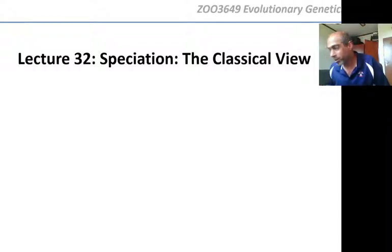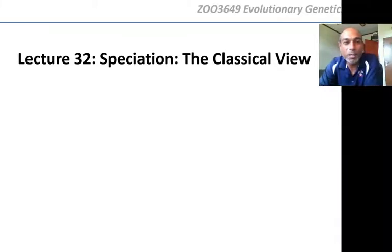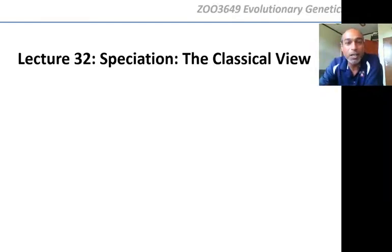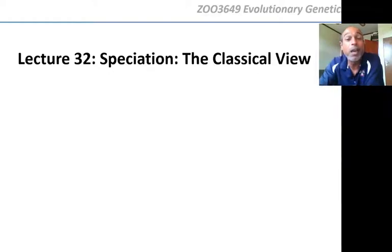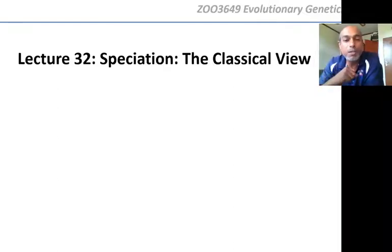Welcome back to ZOO3649. This is lecture 32, and we're on the topic of speciation — how are species formed? The last lecture was about basic ideas of how small, small changes in genes over time, small changes in allele frequencies, leads to species. So now we are going to extend that classical view and talk about the different modes of speciation, the way we classically learned.